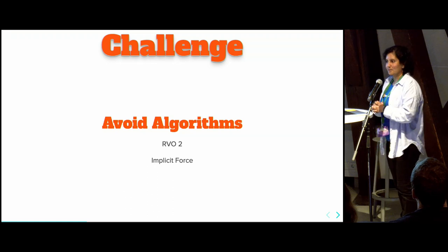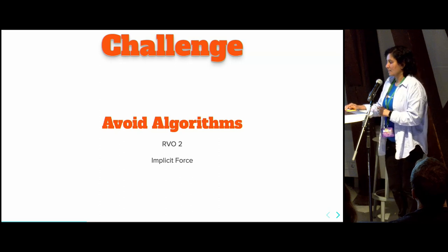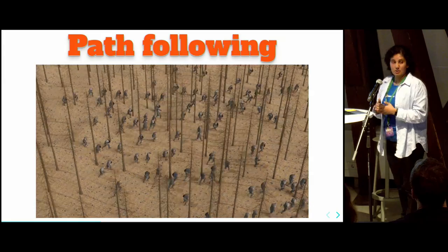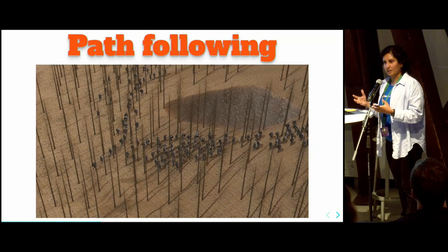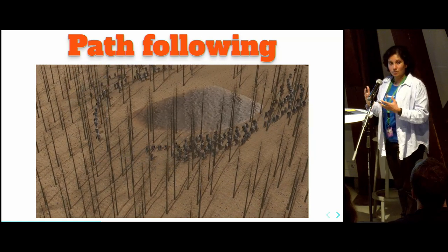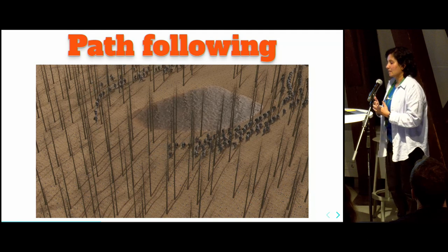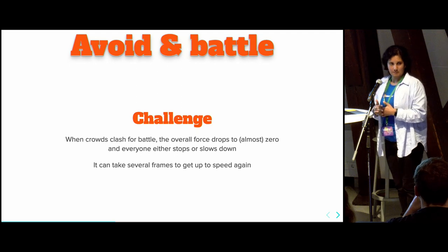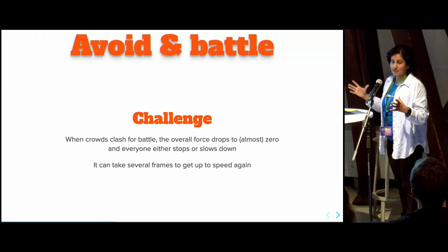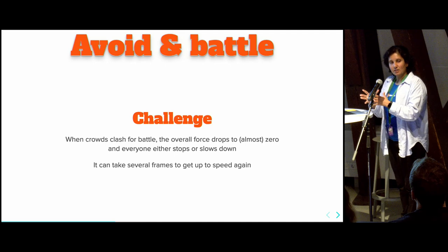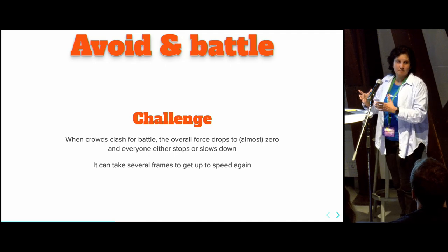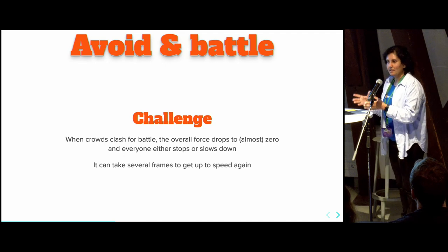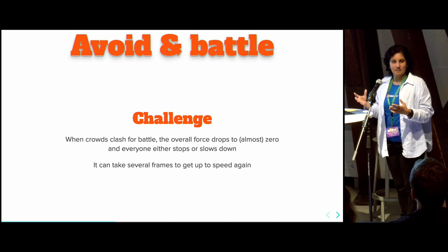Now let's talk about avoidance algorithms, especially RVO2 and the implicit force. Last year I showed path following, and for path following I used the implicit force algorithm — it worked very well. I could easily avoid trees, lakes, and even other agents. However, for battle it became a bit of a nightmare. Using the implicit force algorithm, when the two armies would clash, a lot of agents would come to a full stop because they're fighting. The velocity of the field would drop, the overall force would drop, and this would lead to the whole battlefield coming to a full stop.